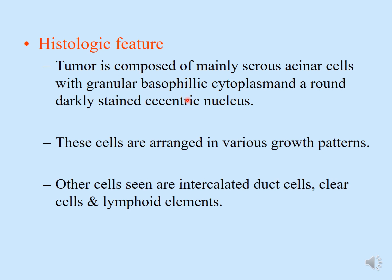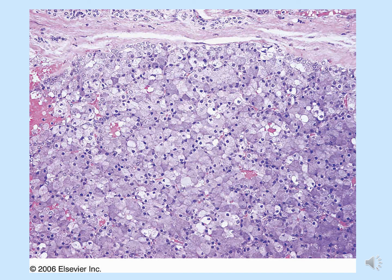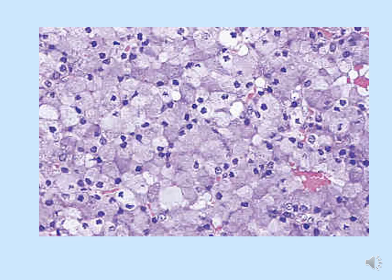These cells are arranged in various growth patterns. Other cells seen are intercalated duct cells, clear cells, and lymphoid elements. On the histopathological image, acinic cells and ductal cells are visible with variable vacuolated basophilic granular cytoplasm. Acinic cells are large and polygonal with basophilic granular cytoplasm and round eccentrically placed nuclei. The granules give a diastase-resistant PAS reaction which may be focal.